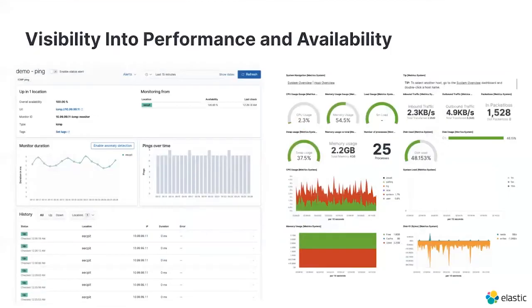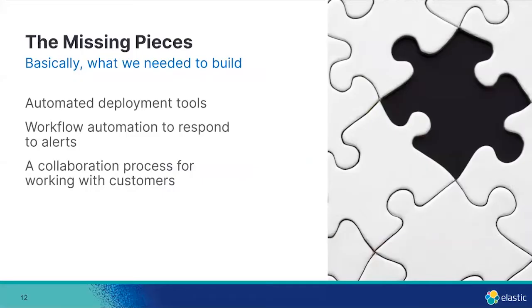In addition to that, we get really nice performance and availability charts out of the box from Elastic's observability solution. This lets us present data and visibility that our clients are demanding without having to do a lot of extra effort. We get great charts covering all the things a client typically cares about on a VM, plus an availability graph so they can be confident in their uptime and we can show back that we've delivered the availability we promised. There are a couple things missing though that we needed to go out and build to turn this into a full solution.